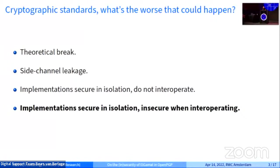The easy case is when you have implementations which work, pass tests, are secure, but just don't interoperate because the specification isn't clear enough. The worst case is where these implementations work, pass tests, are secure in isolation, but are insecure when they interoperate — in a silent way which is hard to detect. This is exactly what I'm going to show you today. OpenPGP is an encryption and signature standard — an IETF RFC for more than 20 years. It is one of the most common ways to encrypt emails, along with S/MIME. There are a few implementations: GPG (GNU Privacy Guard), Botan, Go, and Crypto++.